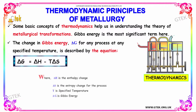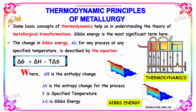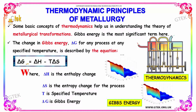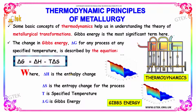Thermodynamic principles of metallurgy: some basic concepts of thermodynamics help in understanding the theory of metallurgical transformations. Gibbs energy is the most important and significant term here. The change in Gibbs energy, delta G, for any process at any specified temperature is described by the equation: delta G = delta H minus T times delta S, where delta H is the enthalpy change, delta S is the entropy change, T is the specified temperature, and delta G is the Gibbs energy.